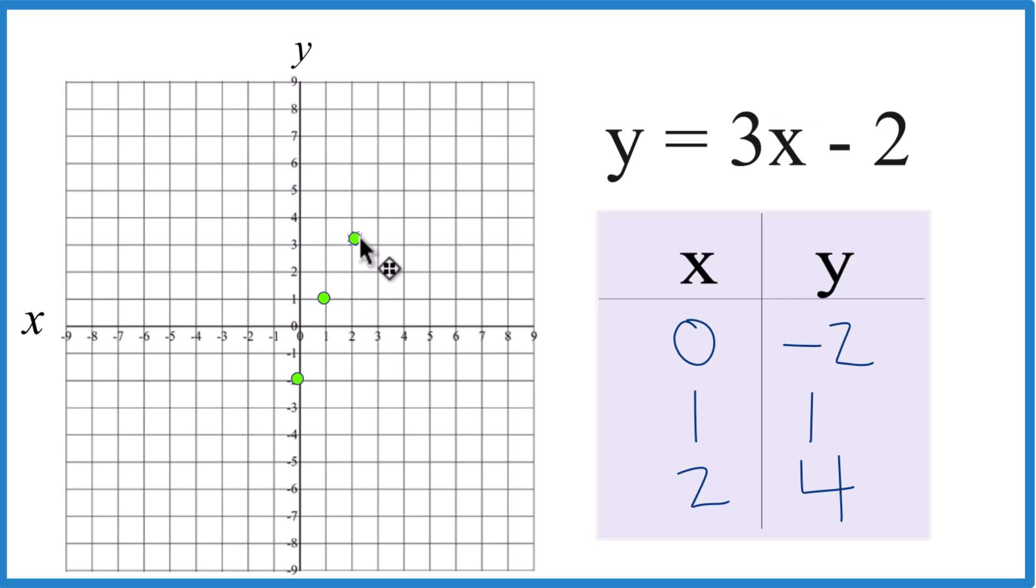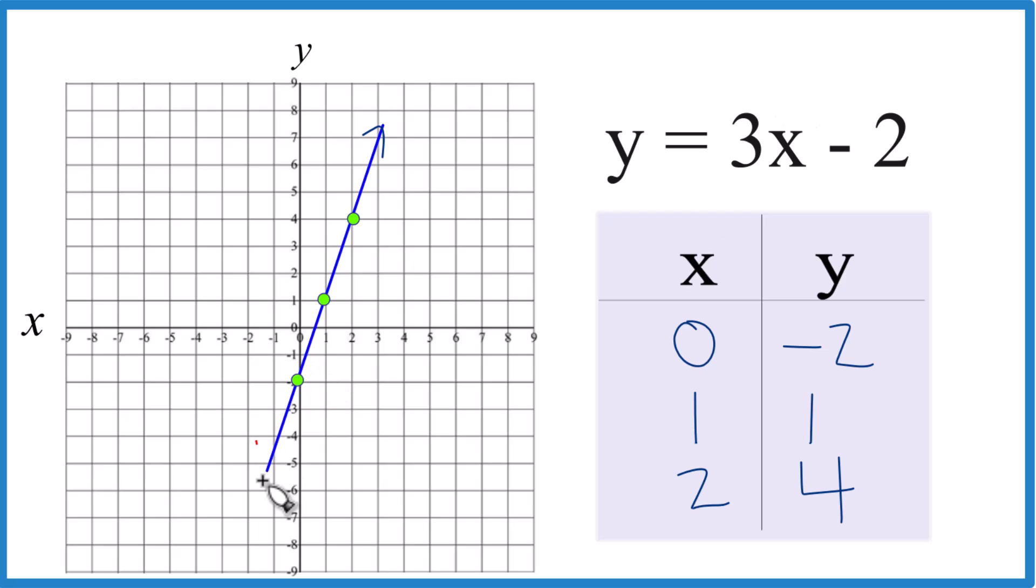X is 2, y is 4, and there you can see our line for y equals 3x minus 2. Let's put a line through that. Then we'll put arrows to show that it goes to infinity, and that's the graph for y equals 3x minus 2 using a table of values.